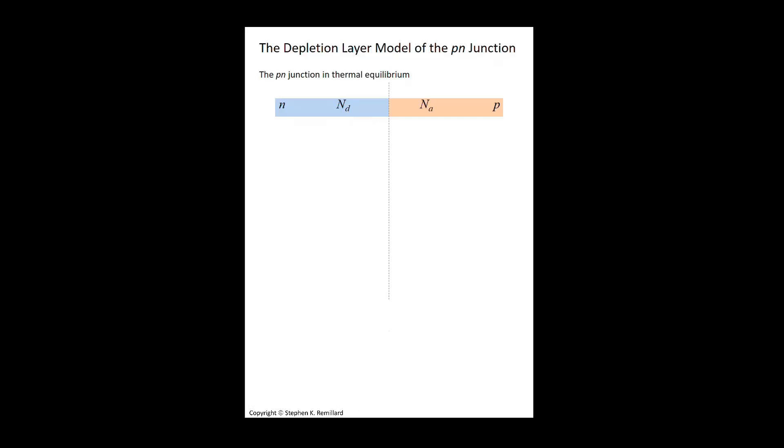When you bring a p-type and an n-type semiconductor together and join them, you have a p-n junction, where you have n-type on one side and p-type on the other side, as shown here.